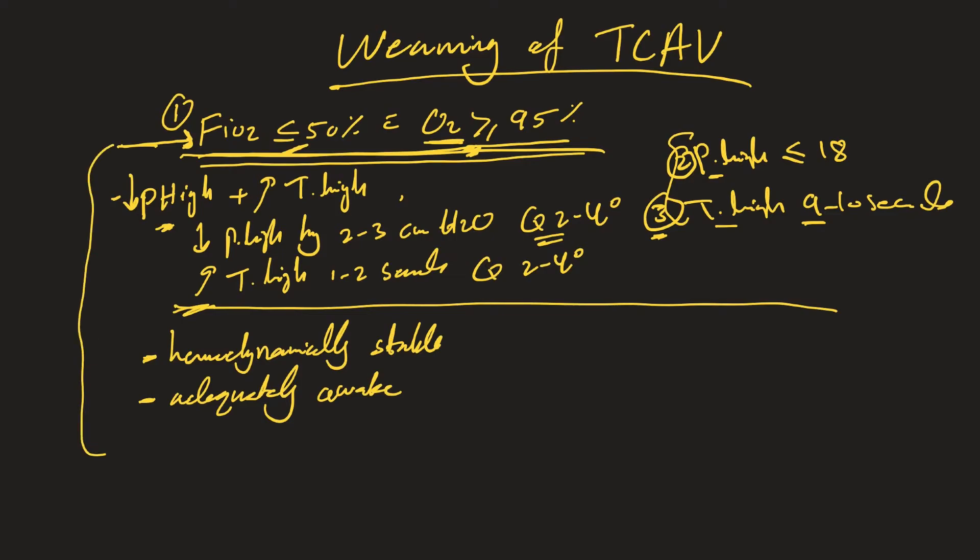At that point when we have all of this, we can start what we call SBT, spontaneous breathing trial. Don't delay. If these criteria are there, just go to SBT trial like other modes. You can put them on CPAP trial, for example 10 over 5, then 5 over 5, 0 over 5, then cuff leak, whatever you do, the traditional SBT that we use with others.